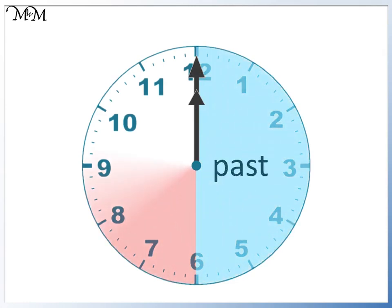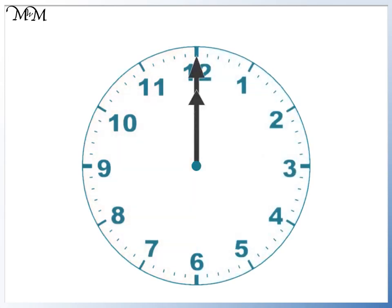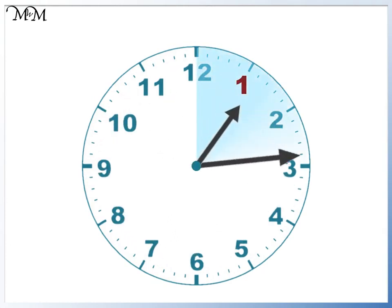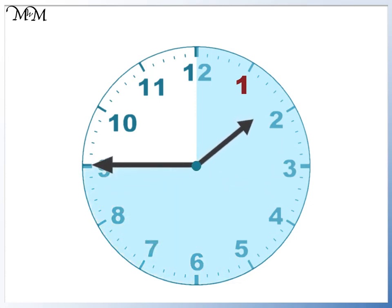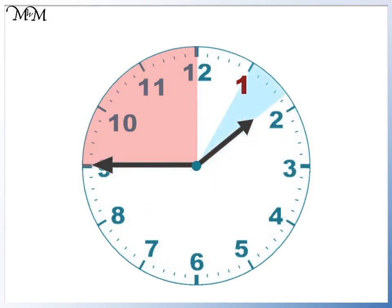We think of the second half of the clock as minutes to the next hour. In this example we'll start at one o'clock. From here the minute hand moves three quarters of the way around the clock to point to nine. Instead of saying that we have gone three quarters of the way past the hour, we can say that the minute hand must move a quarter of the way around the clock to reach the next hour. So we don't say that we have moved three quarters of the way past one — we say that we have one quarter of the way to go to get to two.